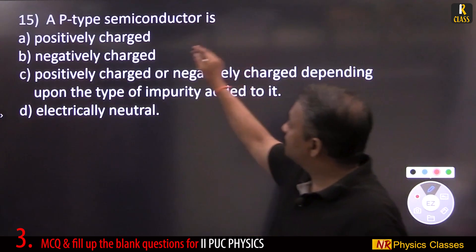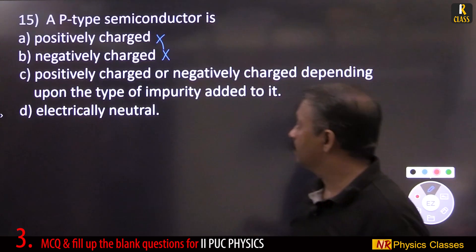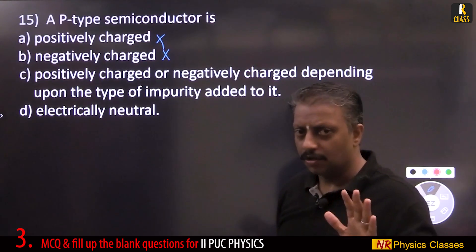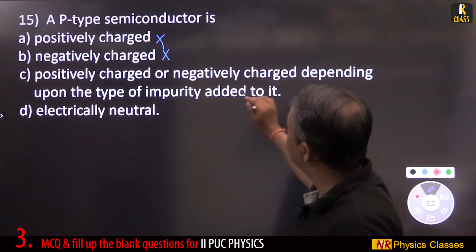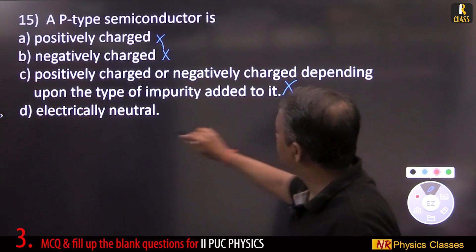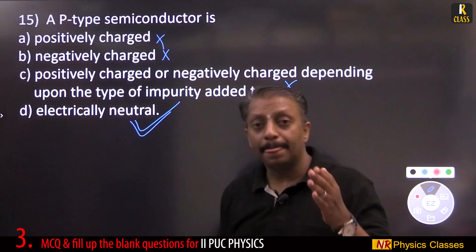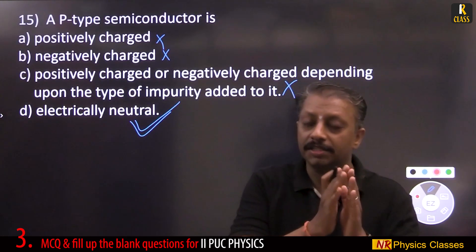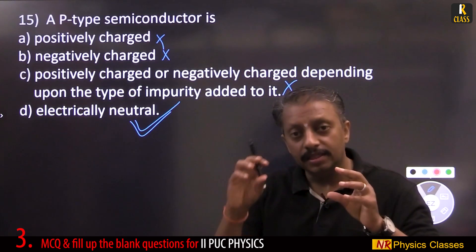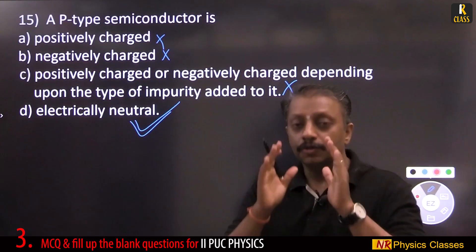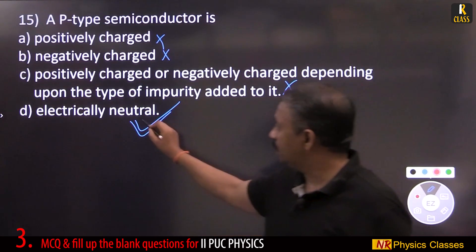Is a P-type semiconductor positively charged or negatively charged? It is electrically neutral. Holes are the majority charge carriers, which is why it is called P-type (positive type). However, holes are not in excess over negative charges — each and every atom in the semiconductor is electrically neutral, so overall the semiconductor is neutral.